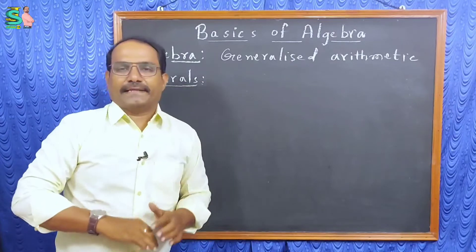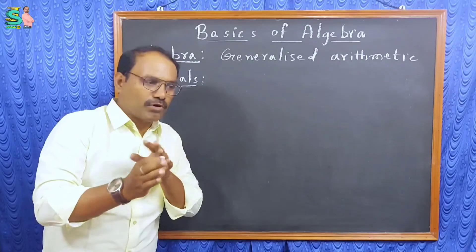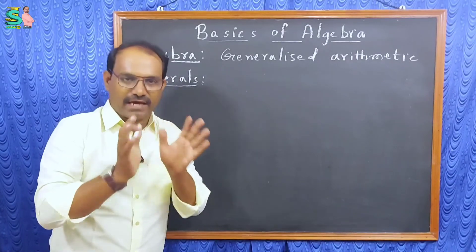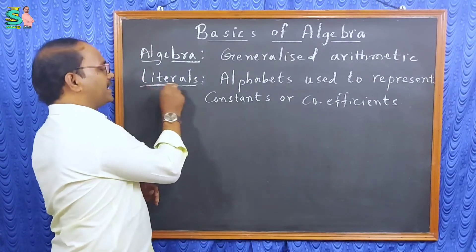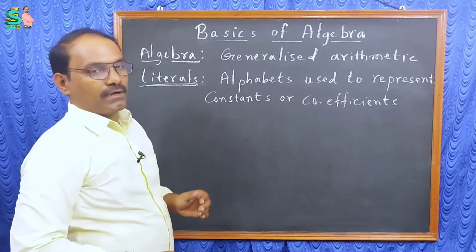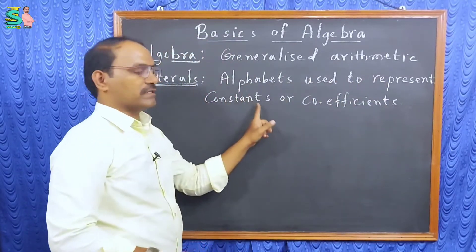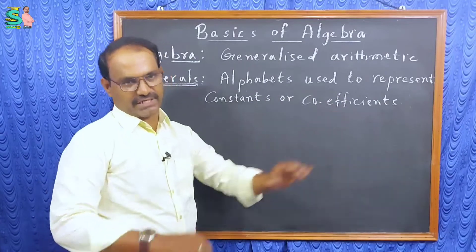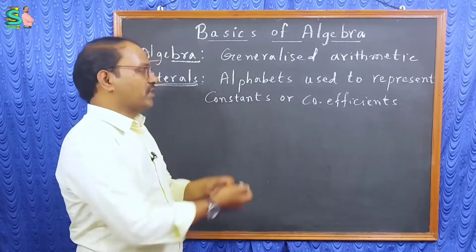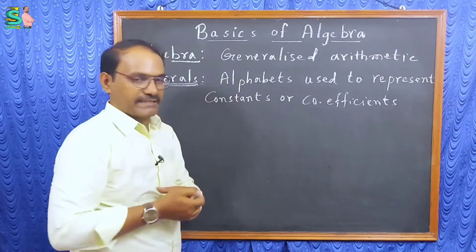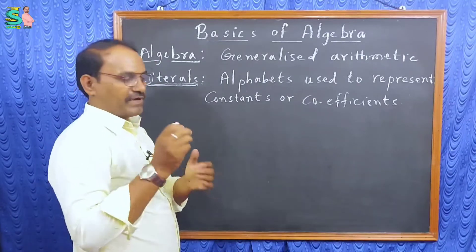Now, what are literals? Variables and literals may both look similar, but they are different. Literals means alphabets used to represent constants or coefficients. Constants are fixed, and for coefficients we use some alphabets — those alphabets are called literals.